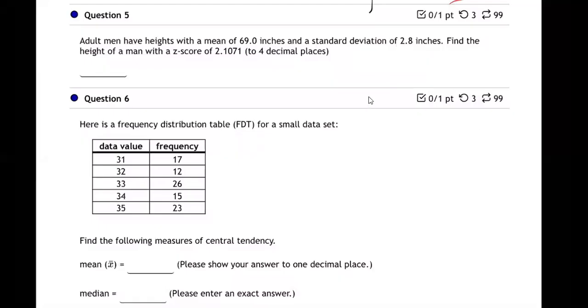Adult men have heights with a mean of 69 inches, standard deviation 2.8. Find the height of a man with a z-score of 2.1071 to four decimal places. Okay, so we're going to need to use the z-score formula, which is on the exam one notes on the Canvas course shell at the very top of unit one. Z-score equals what? Score minus mean over standard deviation.